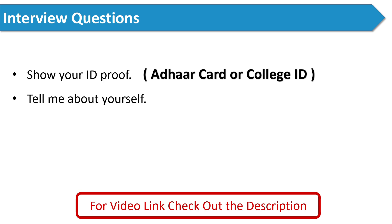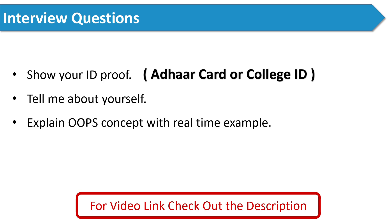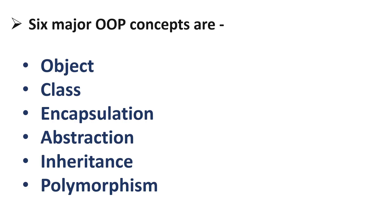The next question was: explain OOPs concept, or object-oriented programming system concept, with a real-world example. You have to explain all six major concepts: object, class, encapsulation, abstraction, inheritance, and polymorphism. You should prepare the definition of each concept with a real-world example. Please prepare this question very well because 90% of interviewers ask it.